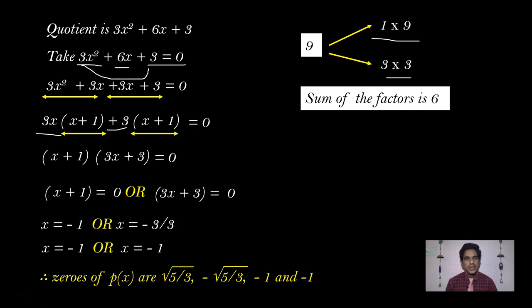So we have calculated the other two zeros: -1 and -1. The steps to follow are: first, find the factor from the given zeros; then do the division; then factorize the quotient. These three steps give us all zeros.